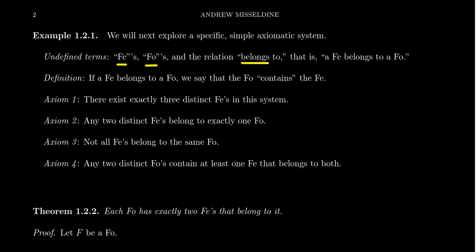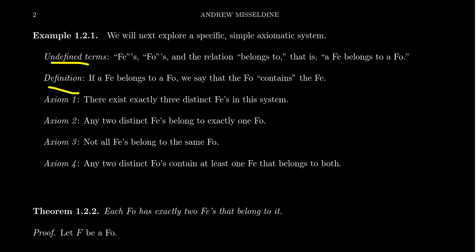From these undefined terms — fee, foe, and belongs to — we can then come up with a new definition. If a fee belongs to a foe, then we say that the foe contains the fee. So containment is just the inverse relation to belonging. We defined it using these undefined terms. We could come up with more definitions if we wanted to, but that's sufficient for this example.